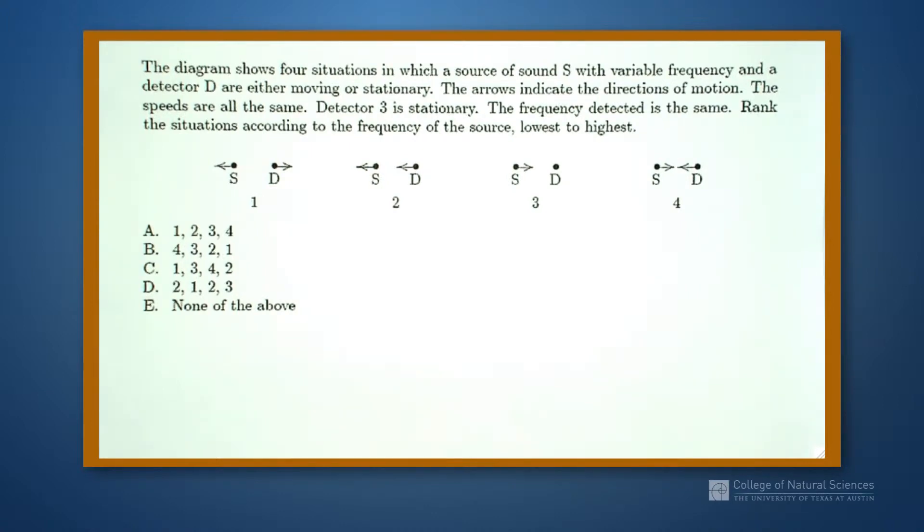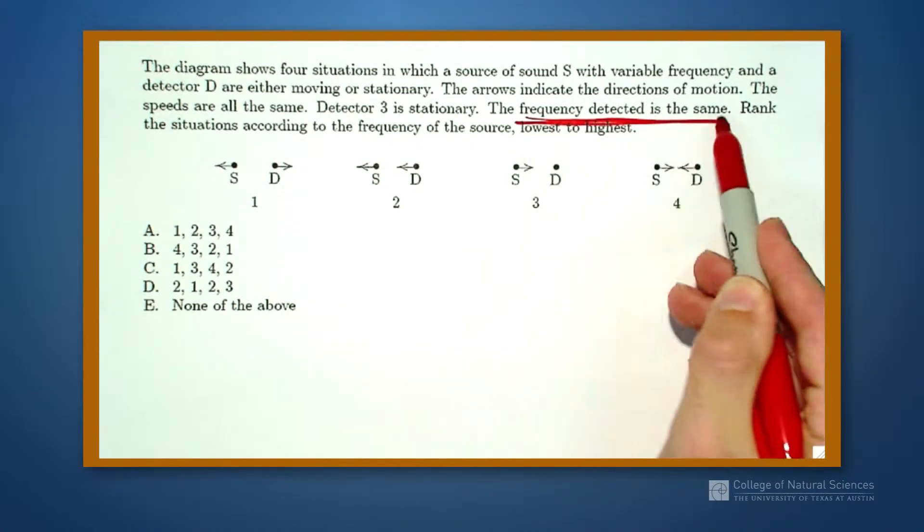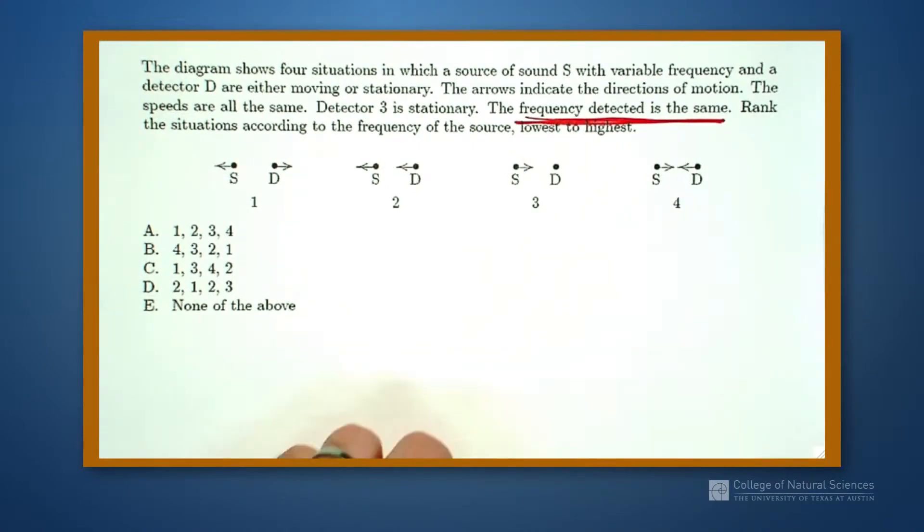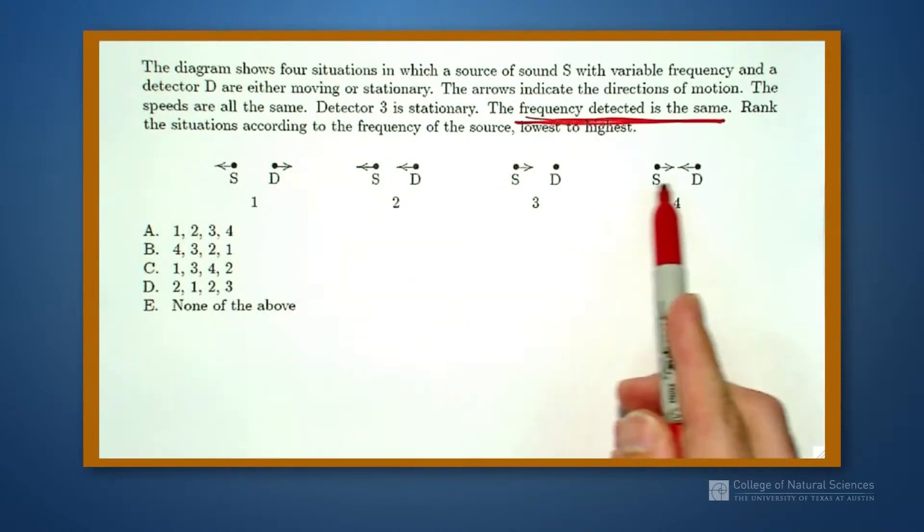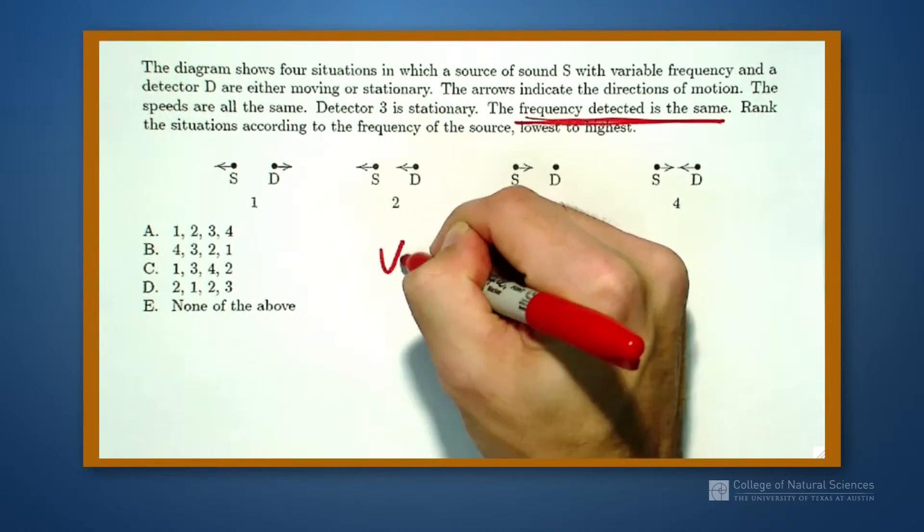However, when we look at the detector, we're going to look at the same frequency, so we observe the same frequency, and we want to rank each situation according to the frequency of the source from lowest to greatest, and in each of the four situations, the sources and the detectors can be moving or not moving depending on what's happening.